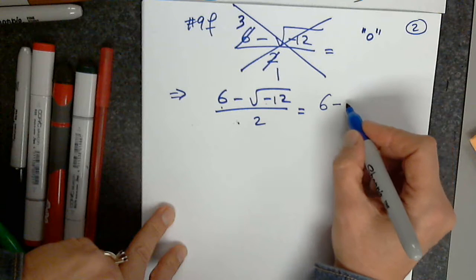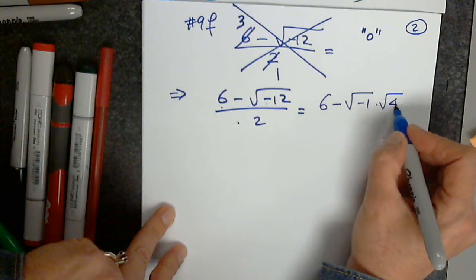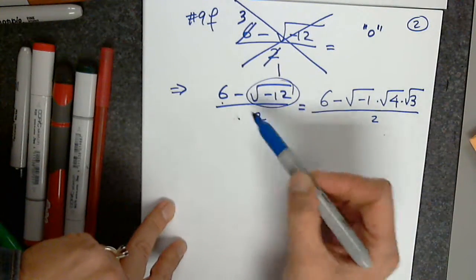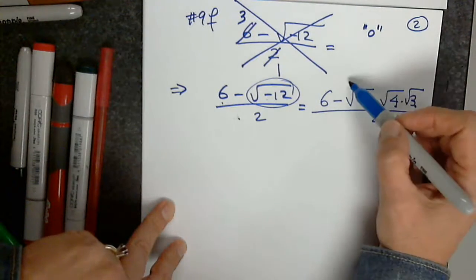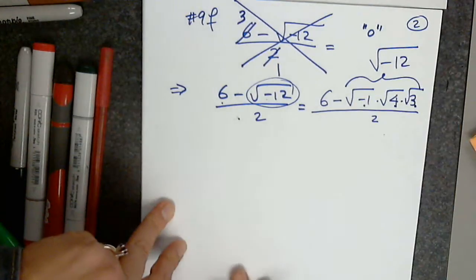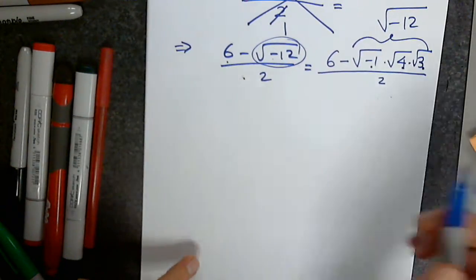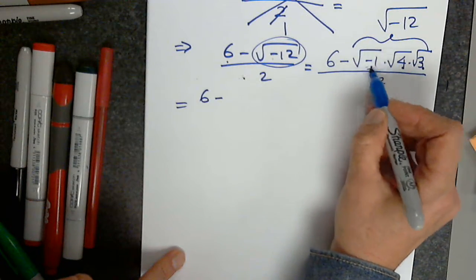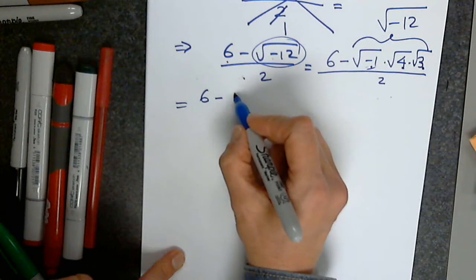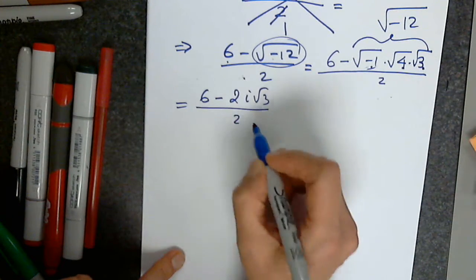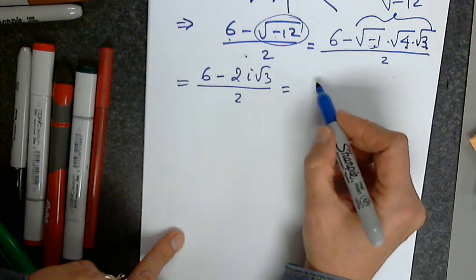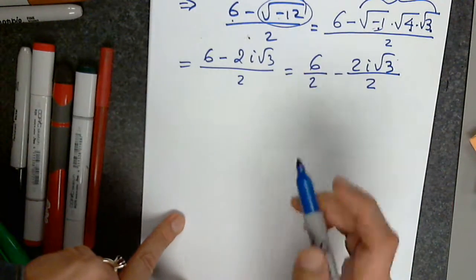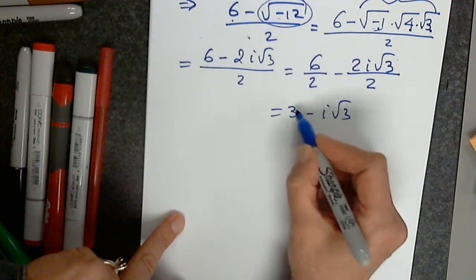So I have 6 minus the square root of negative 1 times the square root of 4 times the square root of 3, divided by 2. I have to break this up into the square root of negative 1, the square root of 4, and the square root of 3 — all these represent the square root of negative 12. So now I have 6 minus 2i times the square root of 3, divided by 2. I have to separate it first. And now I can write 3 minus i times the square root of 3, and that's done.